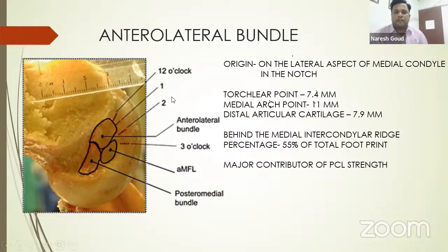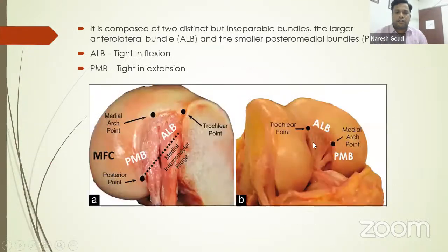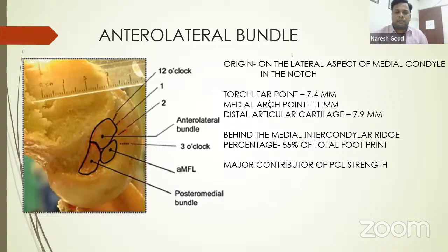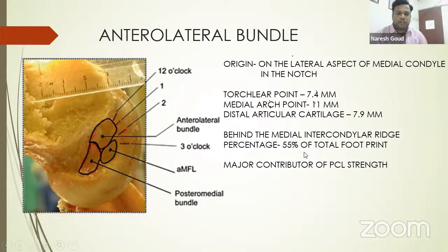Key points for marking the anterolateral bundle: the trochlear point is the highest point of the notch, and the middle arch point is exactly at the nine o'clock position. The anterolateral bundle attachment is 7.4 mm from the trochlear point, 11 mm from the middle arch point, and 7.9 mm from the distal articular cartilage. It covers approximately 55 percent of the femoral footprint and is the major contributor of PCL strength. The ultimate load to failure of the anterolateral bundle is 1120 ± 362 Newtons — this gave the concept of single bundle PCL reconstruction.